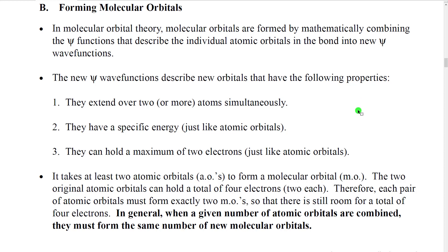So how do we specifically form a molecular orbital? We're not going to be required to do the math — it's already been done. We can use the pictures that we get from the math, but you have to understand that the pictures are representations of specific mathematical functions and specific types of calculations. What we're going to do is combine the individual atomic psi functions and make a new wave function that describes how the electrons would move over more than one atom. We call that a molecular orbital.